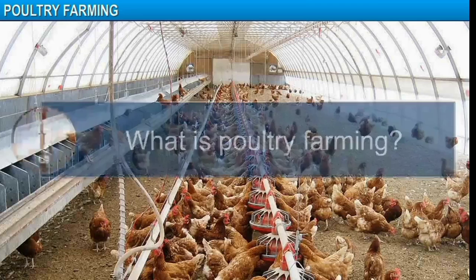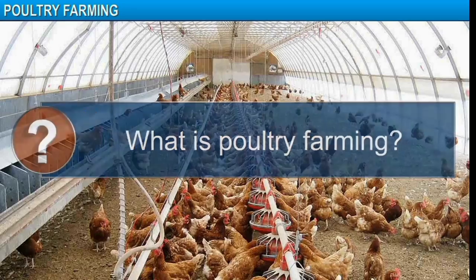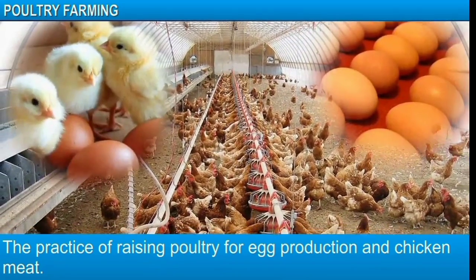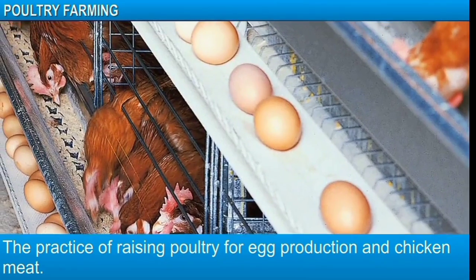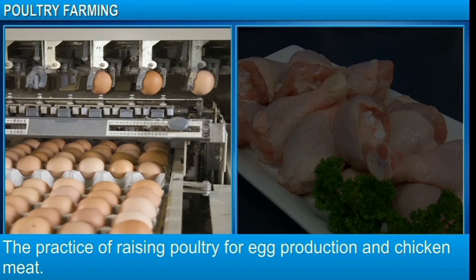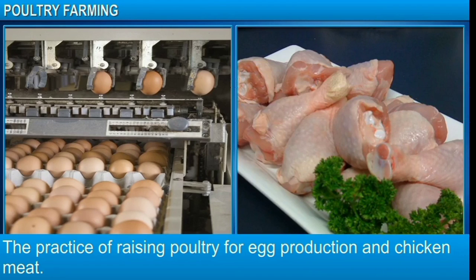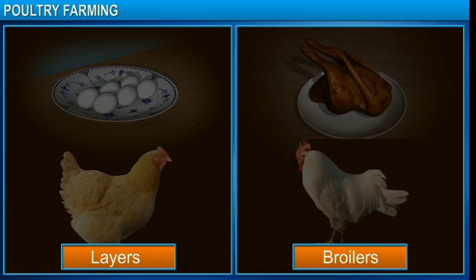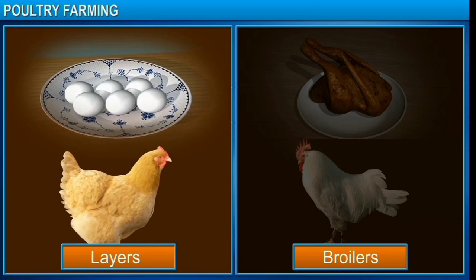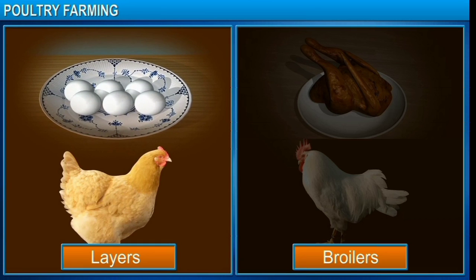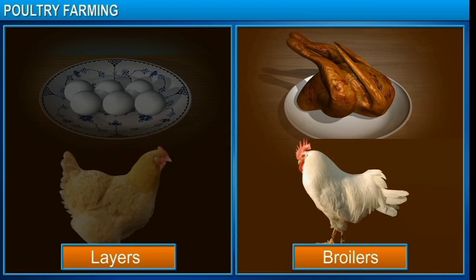In this module, you will learn about poultry farming. Poultry farming is the practice of raising fowl for egg production and chicken meat. Typically, fowls, an improved poultry breed, are used for producing eggs, and broilers are used for producing meat.